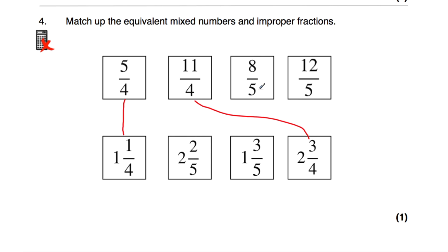For 8 fifths: how many 5s go into 8? That's 1 remainder 3, so it's 1 and 3 fifths. And then finally 12 fifths: how many 5s go into 12? That's 2 remainder 2, so it's 2 and 2 fifths. So we've matched up all the equivalent mixed numbers and improper fractions.